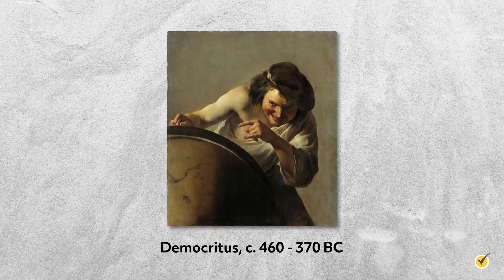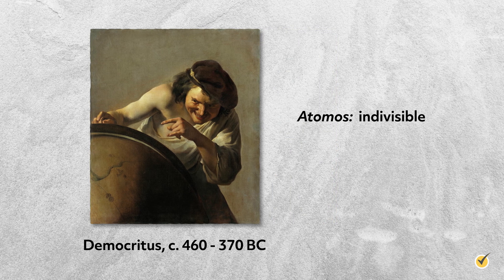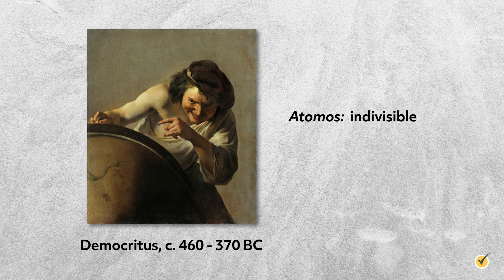We'll begin our story 2400 years ago with the Greek philosopher Democritus. He reasoned that all materials are made up of small uncuttable units. He called them atomos, meaning indivisible, which is where we get our modern word atom. Democritus was a philosopher, not a scientist, and he didn't conduct physical experiments in the way that we do today. Instead, he conducted more of a thought experiment.